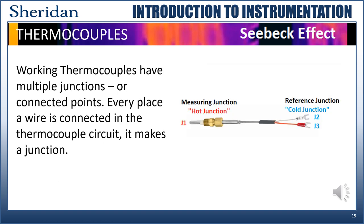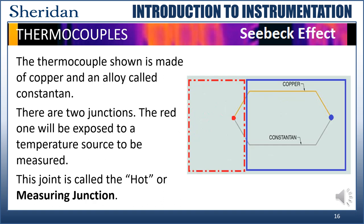Working thermocouples have multiple junctions or connected points. Every place a wire is connected in the thermocouple circuit, it makes a junction. The thermocouple shown is made of copper and an alloy called constantan. There are two junctions in our circuit. The red one will be exposed to a temperature source to be measured. This joint is called the hot or measuring junction. Be aware not to focus on the term hot. Think of it not as temperature, but as the source of the voltage, so it is hot as in live voltage. Or, to be safe, let's just call it the measuring junction.